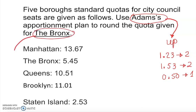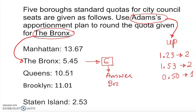In this case, the Bronx — right here — has a standard quota of 5.45. He said whatever change you have, just round it up. So it's going to be 6. The answer by Adams' method for the Bronx is 6.